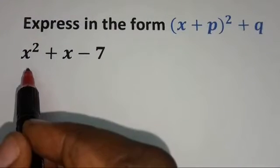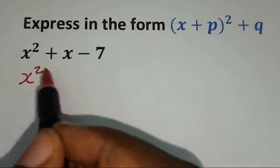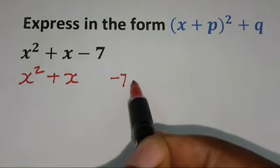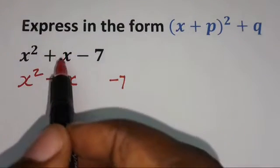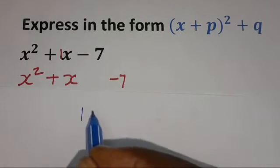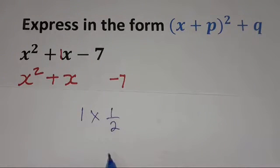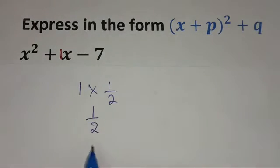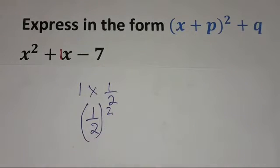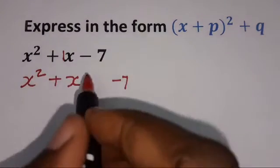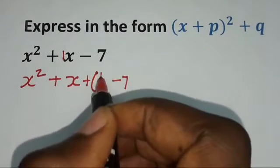Here is the next question. So we are going to have x squared plus x. Let's leave a space here, then minus 7, and also let's leave a space here. The coefficient of x in this case is a 1. So we need to half it by multiplying it by 1 over 2. Then we are going to have 1 over 2 as half of that. Then square it. Meaning we are going to add this quantity on the left and subtract it on the right, just as we did in the previous example. So here we are going to add 1 over 2 squared.